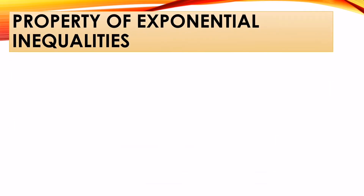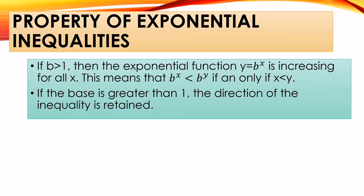Property of exponential inequalities: if b is greater than one, then the exponential function y = b^x is increasing for all x. This means that b^x < b^y if and only if x < y. So meaning, if the base is greater than one, the direction of our inequality does not change — it is retained.